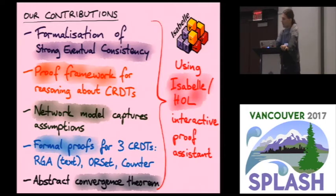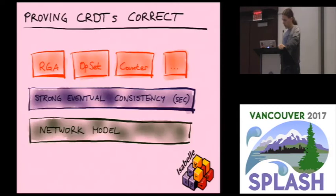This is what we did. We used Isabelle/HOL, an interactive proof assistant, to first of all just define exactly what it is we actually mean with strong eventual consistency. This definition was provided semi-formally in a paper on CRDTs and we formalized that into Isabelle. Then we built up a framework for reasoning about CRDTs and showing that they satisfy these properties of strong eventual consistency. To make it concrete we proved the correctness of three particular CRDT algorithms: RGA which is a text editing algorithm, OR-set which is a set, and a counter. All of this is based on a network model which I shall explain in a moment.